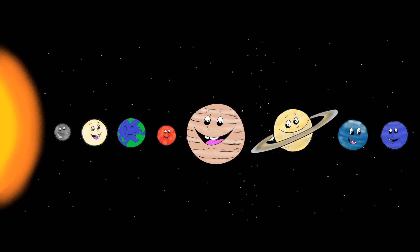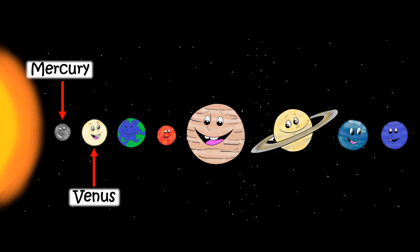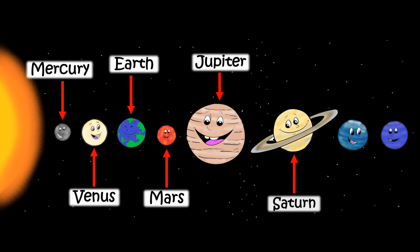Now, let us learn the names of the eight planets in order of their distance from the Sun. Mercury, Venus, Earth, Mars, Jupiter, Saturn, Uranus, Neptune.